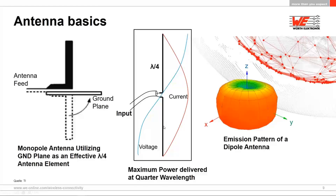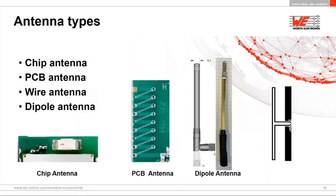In the Z direction — top and bottom — we have the least signal strength, with maximum signal towards the side. This is the omnidirectional dipole pattern. Many antennas are directional and have a distorted rather than round shape. The negative part of the antenna can also be part of the PCB ground plane, and you would still have sufficient antenna on the positive side to radiate an electromagnetic signal.